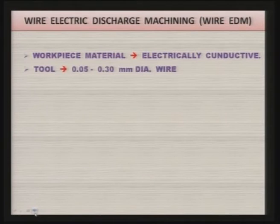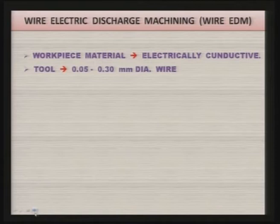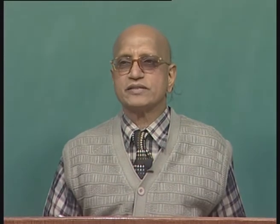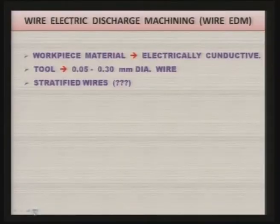The wire diameter — that is, the tool diameter — is normally 50 to 300 microns depending upon the requirement, availability, and type of wire. In the beginning, most manufacturers used bare copper wire or other material wires, but lately Charmilles Corporation developed a new type called stratified wire. The question arises: what is stratified wire and why should we use it? We will see that after a few slides.